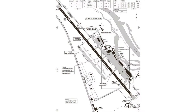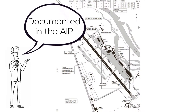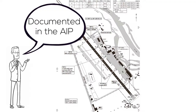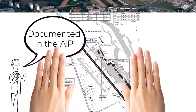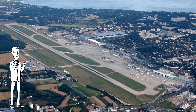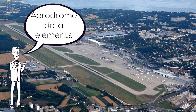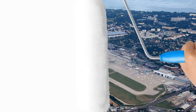Every aerodrome has its special characteristics and an individual layout. The relevant data for aircraft operations have to be documented in the AIP. In detail, we are talking about the following elements of aerodrome data.